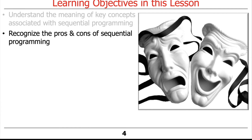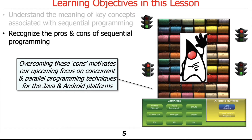We'll also talk briefly about the pros and cons of sequential programming, because not everything is unicorns and rainbows — there are some downsides, which of course is what motivates concurrency. We'll talk about the cons, and then the rest of the material will address those with concurrent and parallel programming techniques. The focus here is on concurrent techniques; I have a sibling class in the fall that covers parallel programming.